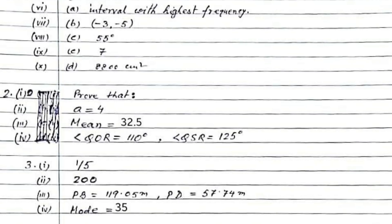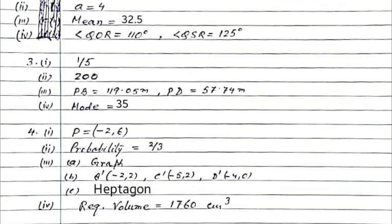Question number 4: Find a point P which divides internally the line segment joining the points A and B in the ratio of 1 is to 3. P will equal minus 2 and 6. This is answer 41. For part 2, the probability will be 2 by 3. What is the probability that the letter selected is not a vowel? The probability will be 2 by 3.